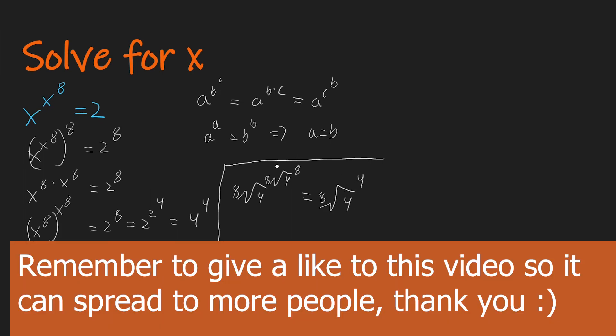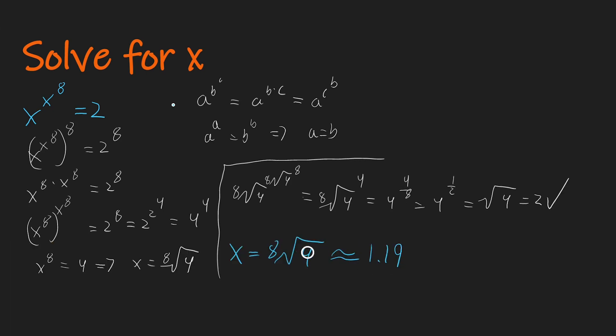And if we write this, this is the same as writing 4 power to 4 over 8, which is equal to 4 power to a half, which is equal to the root of 4, which is equal to 2. So x is approximately 1.19.